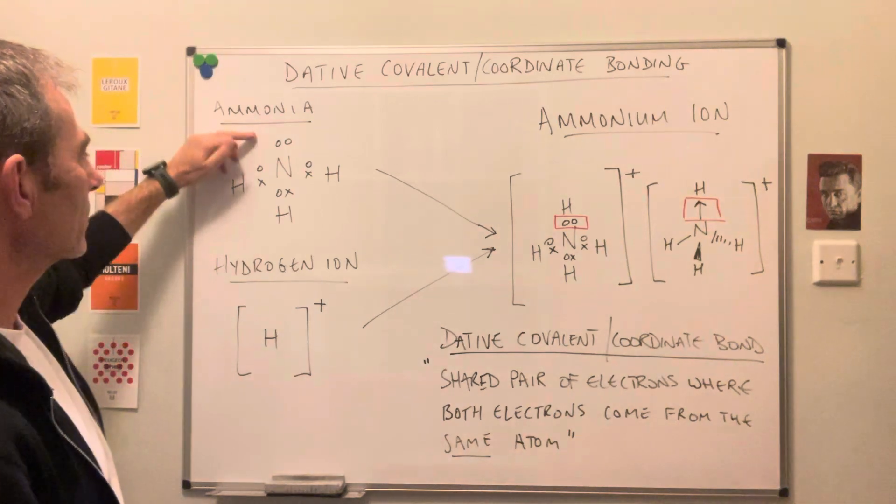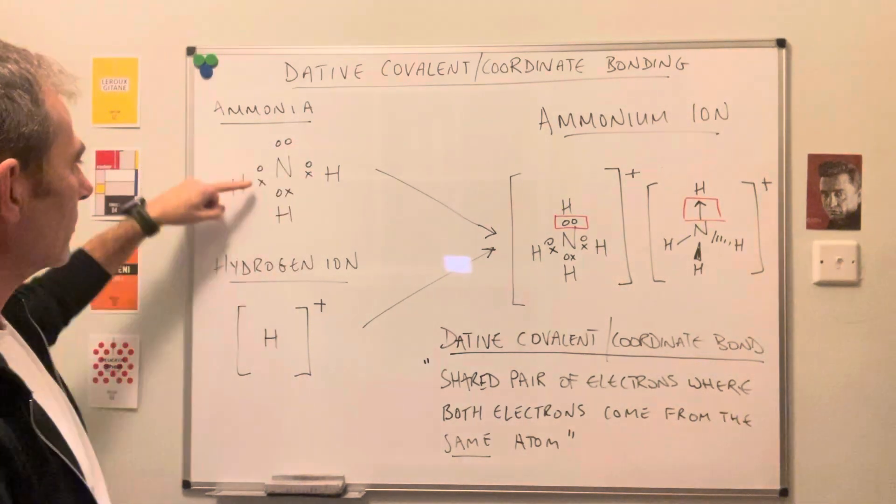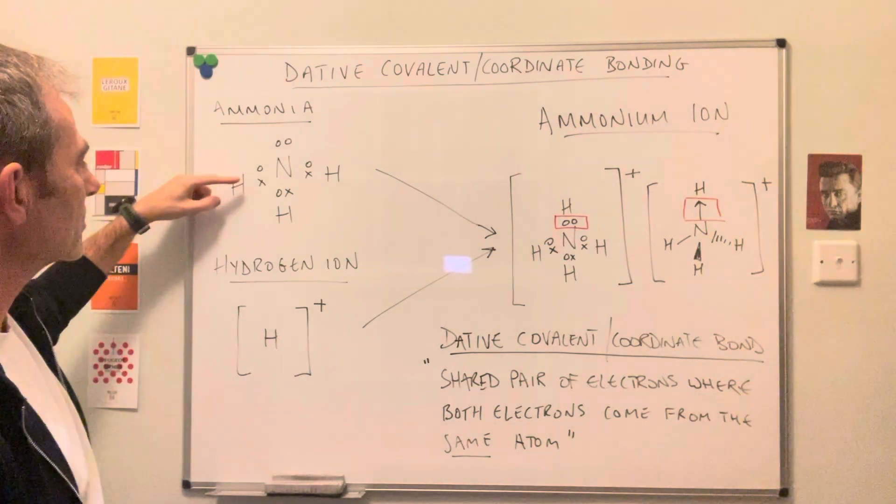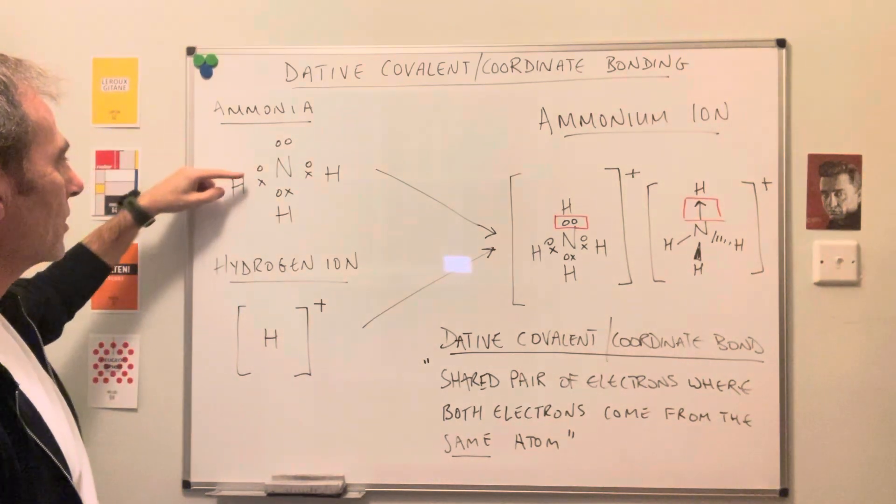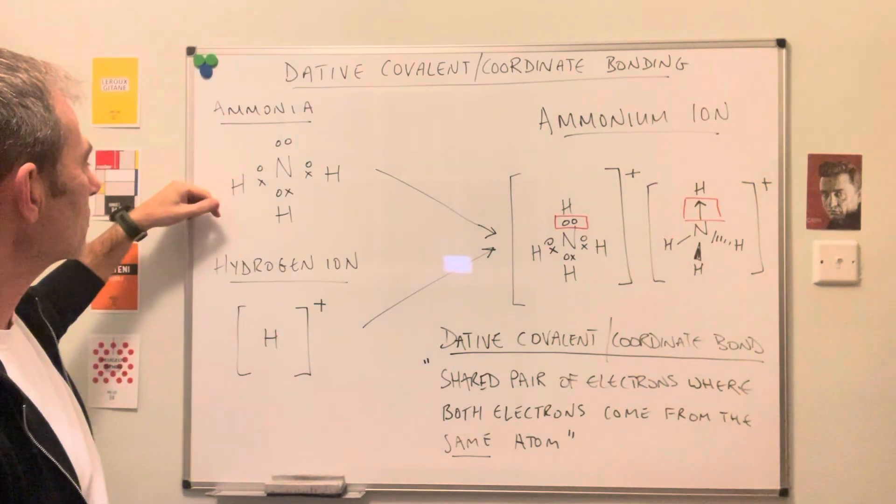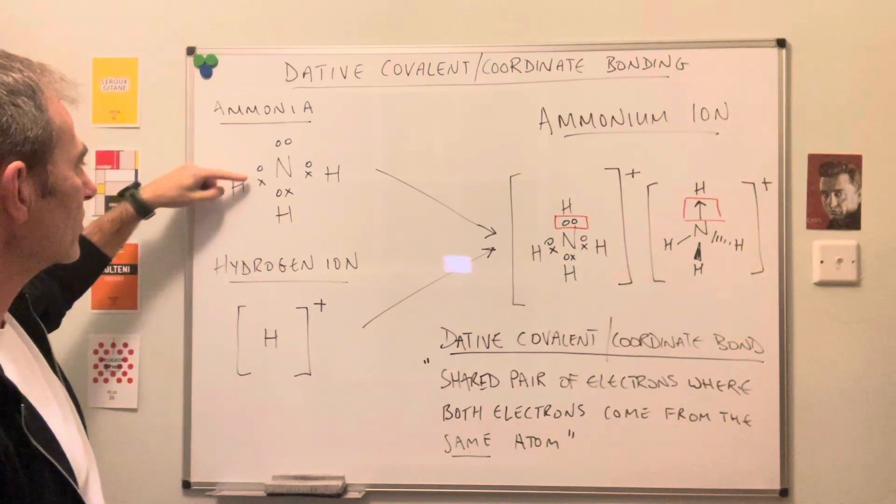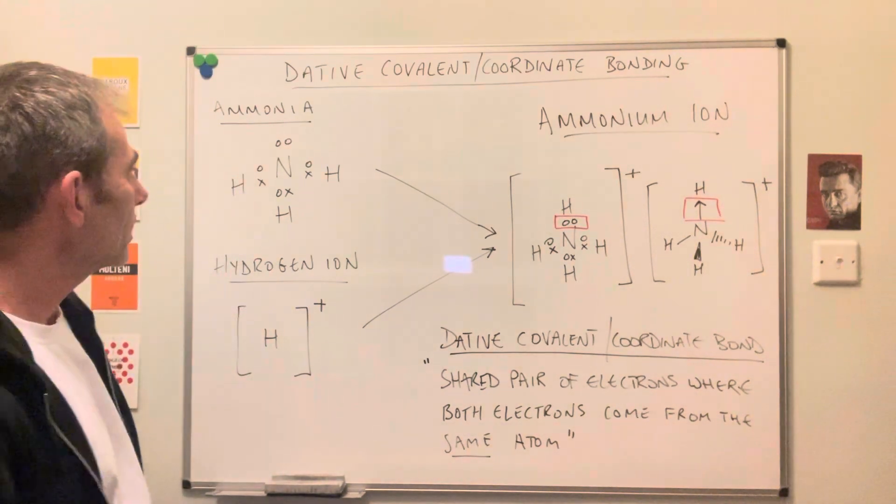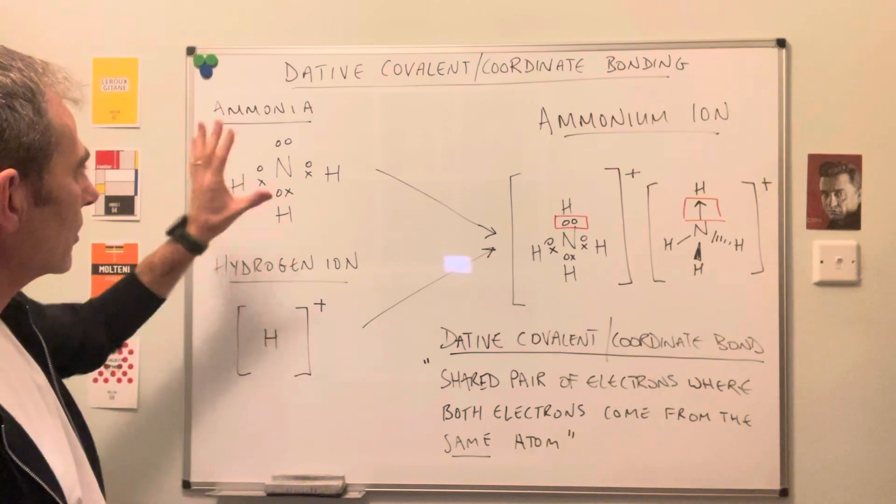This is a dot and cross diagram and you can see we've got three covalent bonds between the nitrogen and the hydrogen. So that's a shared pair of electrons where each atom's providing an electron in the shared pair. So ammonia there.